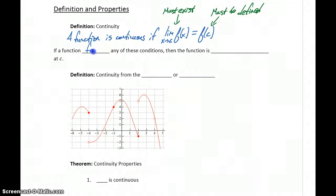If a function fails any of those conditions, then the function is said to be discontinuous or not continuous at that point C.